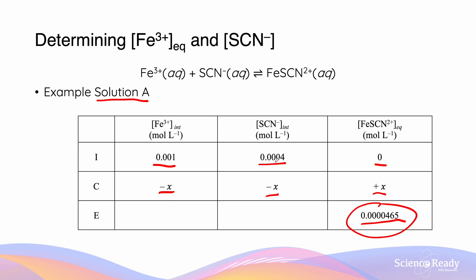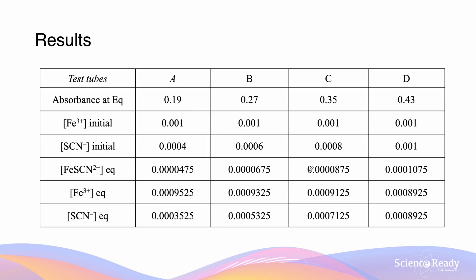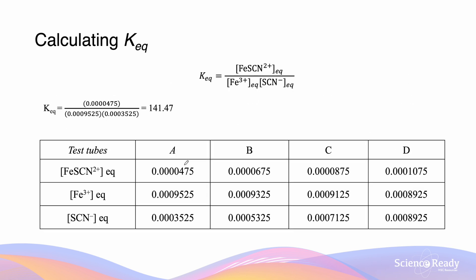So now we can fill in our tables. The final concentration of SCN⁻ is 0.0004 − x, and Fe³⁺ is 0.001 − x, where x = 0.0000465. Putting that into the calculator, we end up getting 0.0009525 mol/L for Fe³⁺ and 0.0003535 mol/L for SCN⁻. Now our entire table can be filled in, and we have the equilibrium concentrations for everything we need.